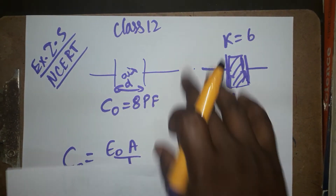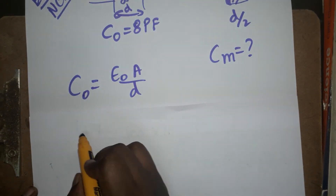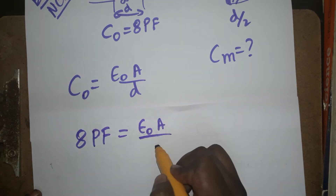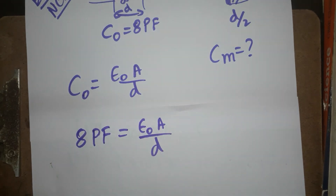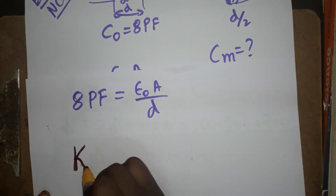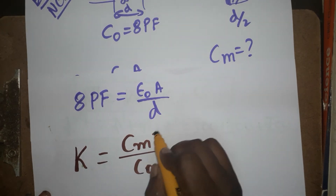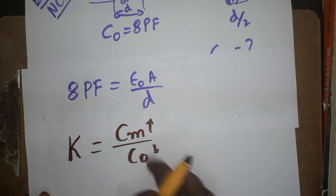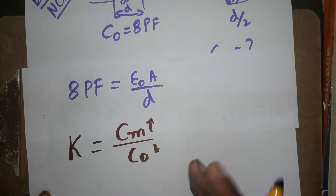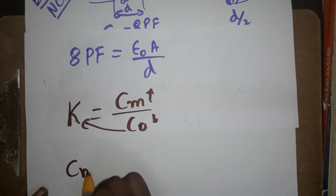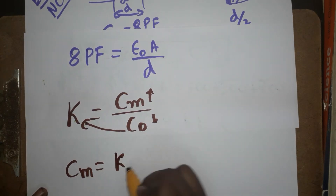So we have C₀ = 8 picofarad = ε₀A/d. Now for the capacitance in a medium, the ratio C_m / C₀ equals k, the dielectric constant. When a medium is placed, the capacitance increases. Therefore, C_m = k × C₀.